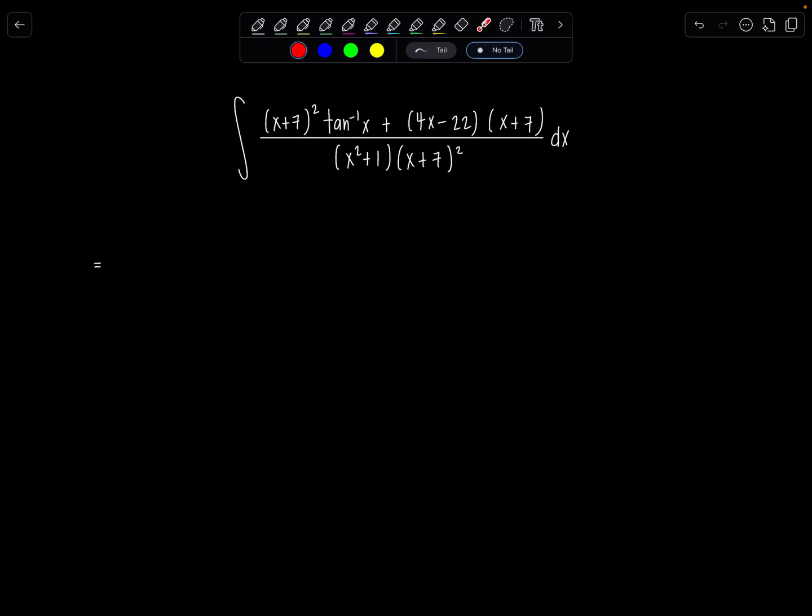Look at this tan inverse of x and x squared plus 1. I feel good things brewing. So let's write this first as x plus 7 squared tan inverse of x over x squared plus 1 x plus 7 squared dx.